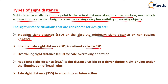The next is overtaking side distance, which is generally used for safe and efficient overtaking operations along a particular road. Next, headlight side distance is the distance visible to a driver during night driving under the illumination of headlights. Finally, safe side distance to enter into an intersection is that distance which is provided at the entrance of an intersection.